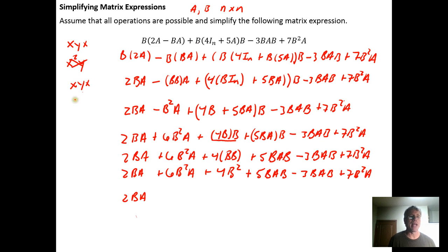So here I have plus 6B²A plus 7B²A is going to be 13B²A, and I have a 4B². I don't have any other B² terms.